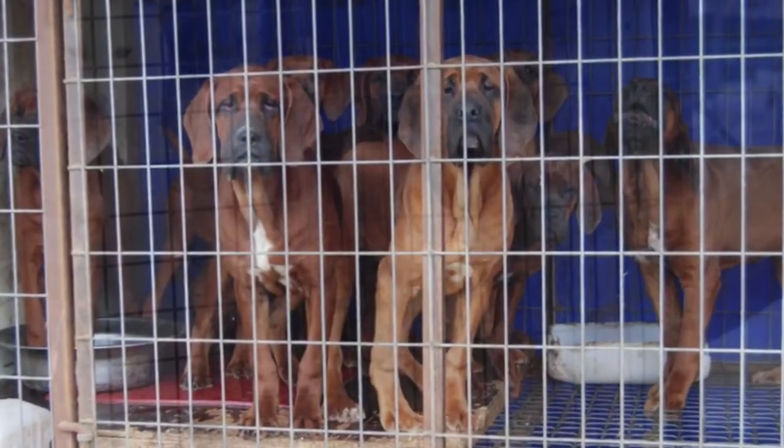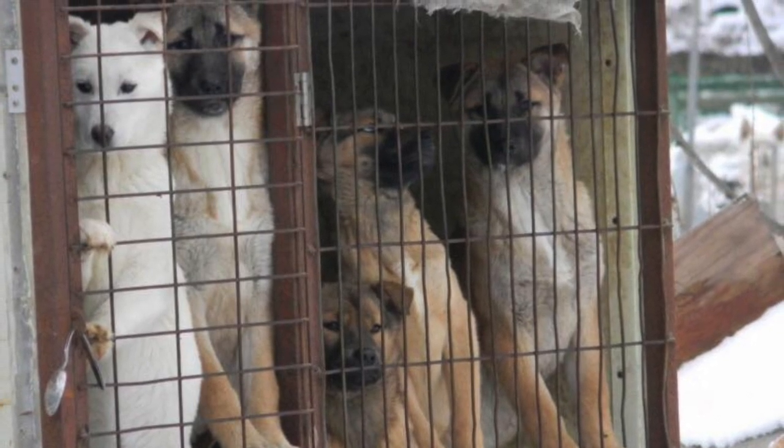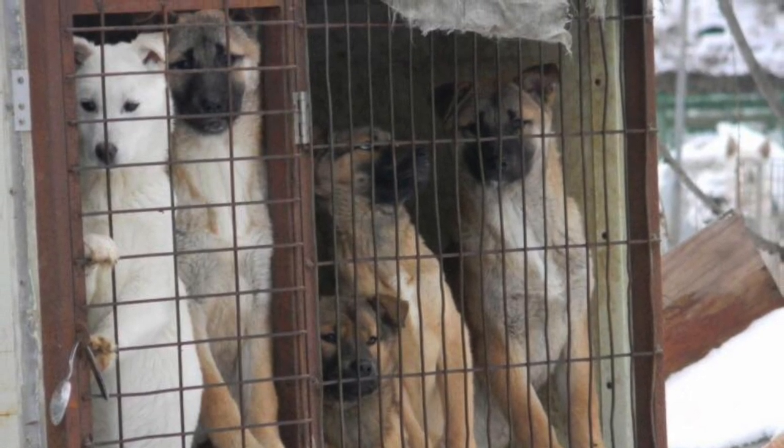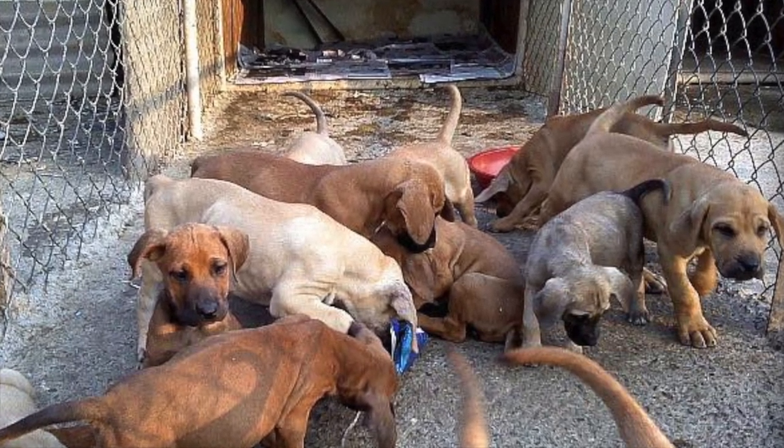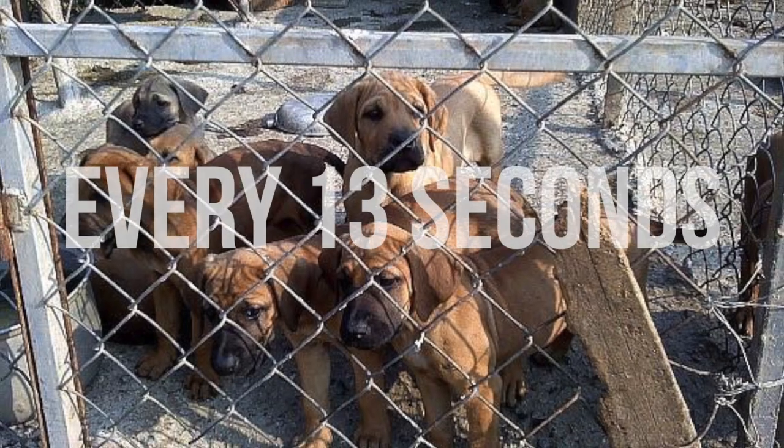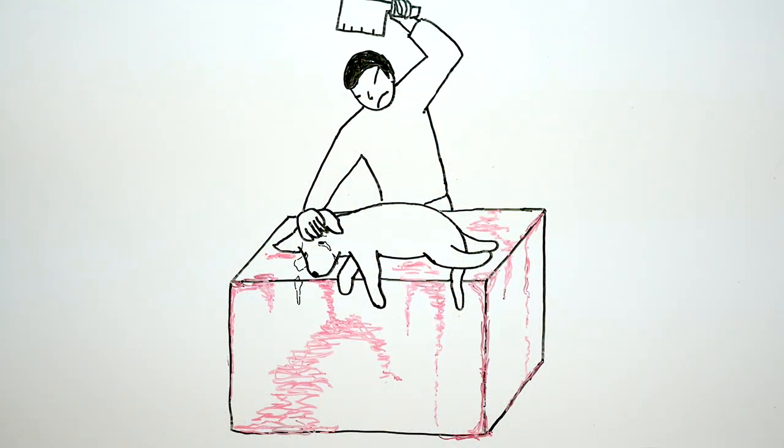They're killed in all sorts of barbaric ways, from hanging, to beating, to throat slicing, to electrocution. Some dogs are slaughtered on farms, while others are killed at slaughterhouses, dog meat restaurants, or even people's backyards. Every 13 seconds, a dog is slaughtered for human consumption.